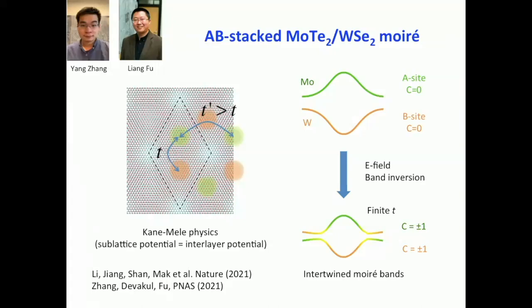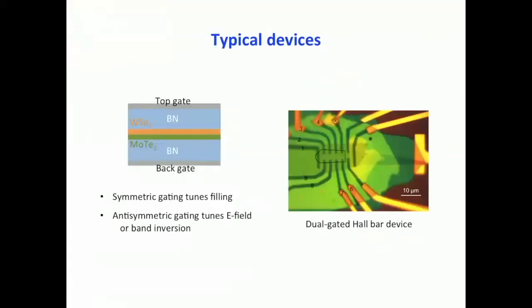This is the typical device structure. The moiré sample is encapsulated between two hexagonal boron nitride dielectrics with top and bottom gate electrodes, giving two degrees of freedom. We can independently tune the hole density and apply a vertical electric field without changing the electron density — to tune the band inversion. The device is contacted by multiple electrodes for transport measurements, and a laser beam can be focused at the center for optical measurements.